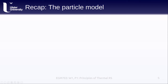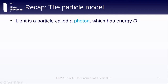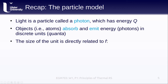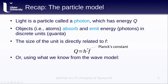Light can behave as both a particle and a wave. In the particle model, light is a particle called a photon, that has a particular energy we normally denote Q. Another major discovery of 19th and early 20th century physics is that objects — which is to say atoms — can only absorb and emit energy in discrete units called quanta. This is where we get the term quantum mechanics. The amount of energy that a photon has is directly related to its frequency by a constant known as Planck's constant.